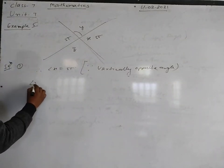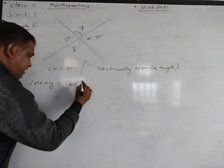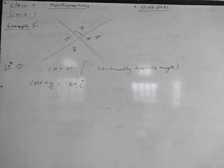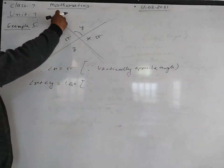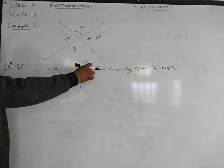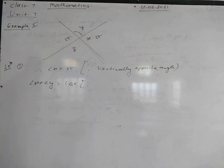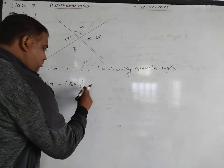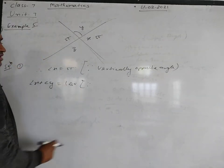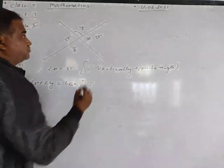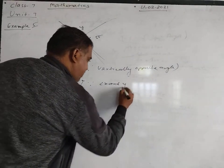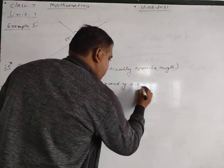Second, angle x plus angle y is equal to 180 degrees. This is a straight line, so angle x and y together equal 180 degrees. Since angle x is 55 degrees, we have 55 degrees plus angle y is equal to 180 degrees.